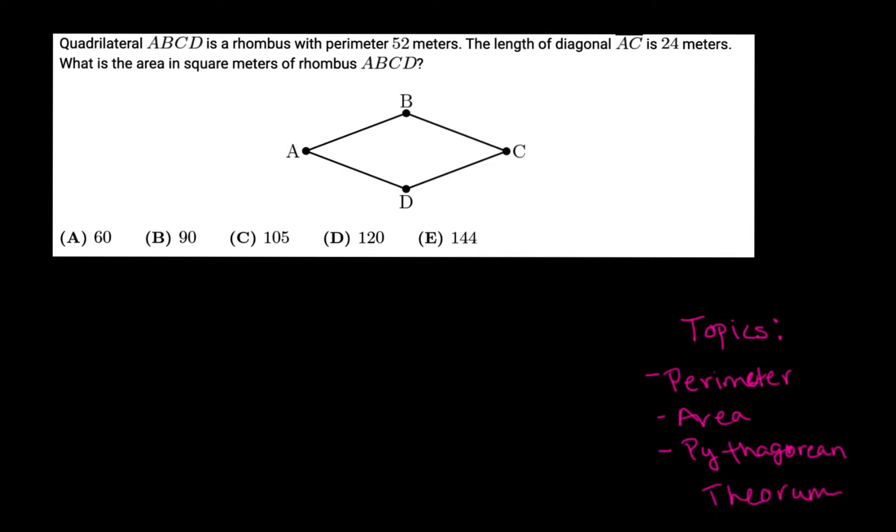Let's read through our problem. Quadrilateral ABCD is a rhombus with perimeter 52 meters. The length of diagonal AC is 24 meters. What is the area in square meters of rhombus ABCD? I encourage you to take a minute, try this on your own, then come back and hit play whenever you're ready.